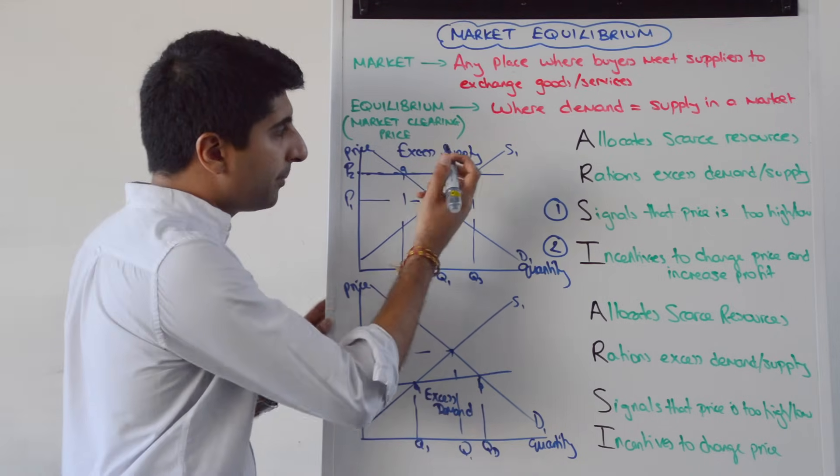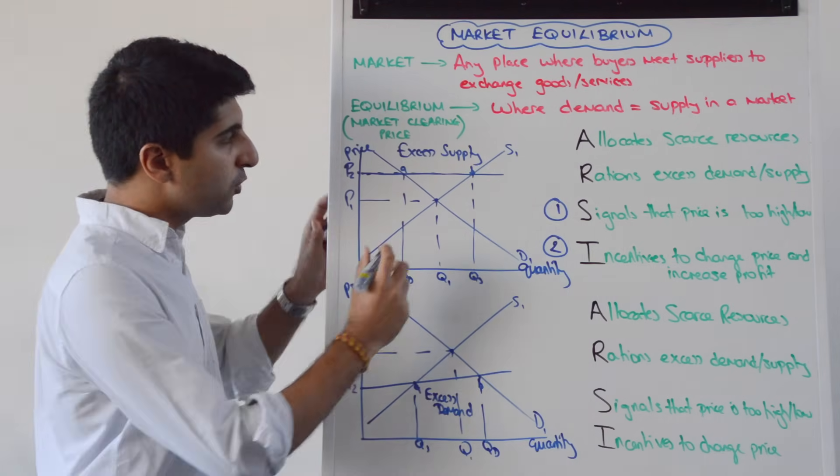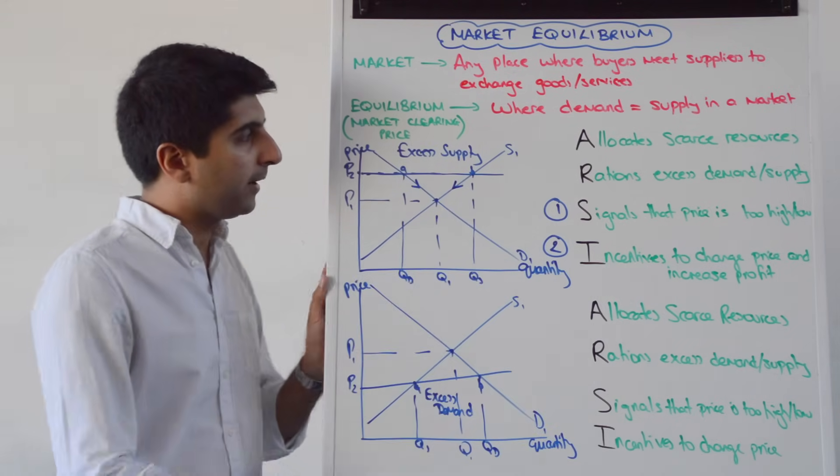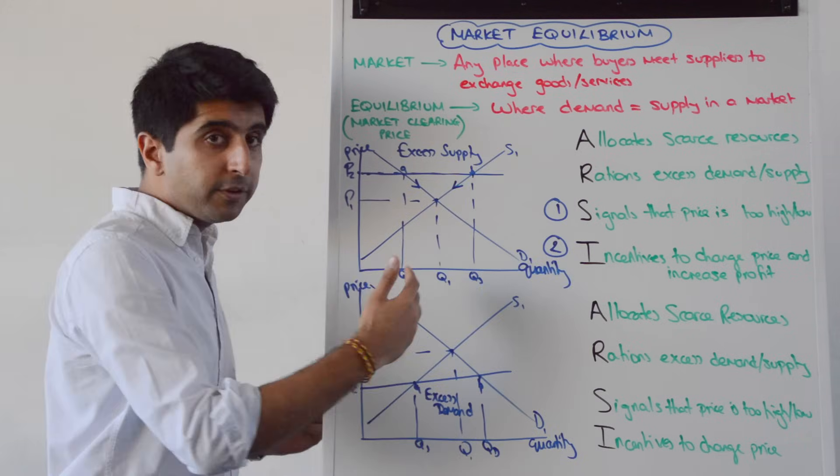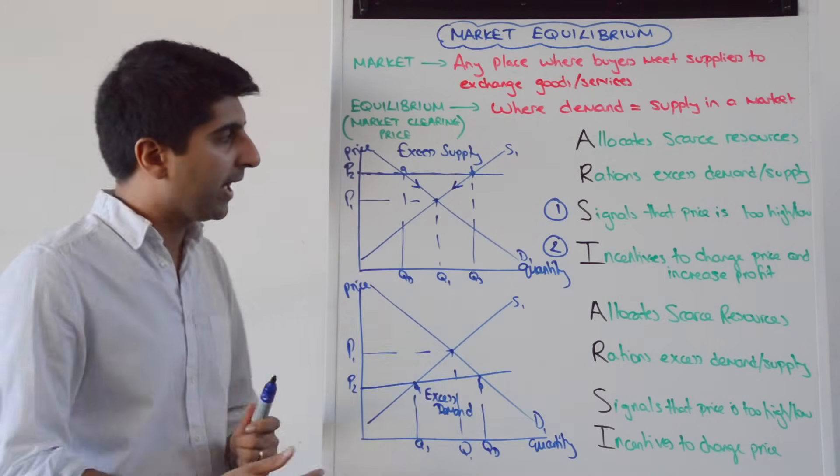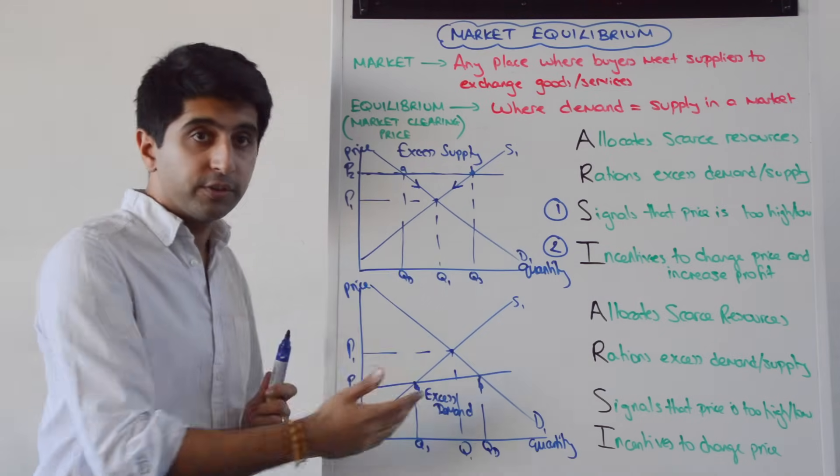If they do that, if they reduce that price from P2 to P1, there will be a contraction along the supply curve and an extension of demand. So we move along the supply curve downwards, a contraction of supply, and a movement down the demand curve, an extension of demand.